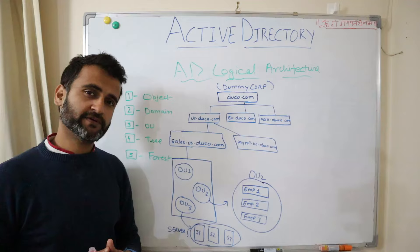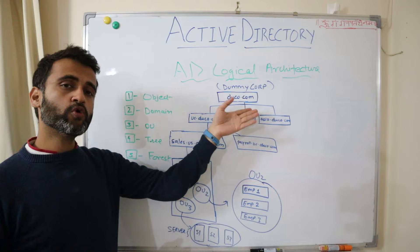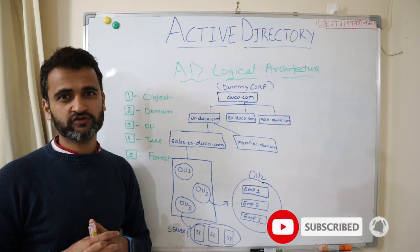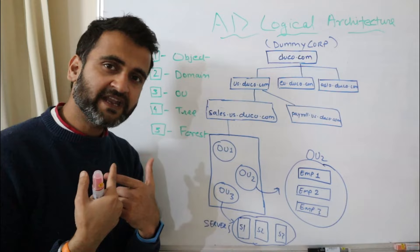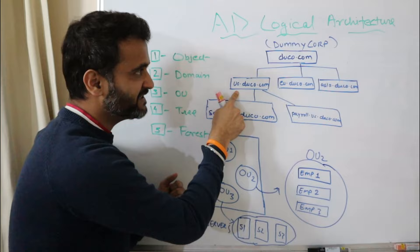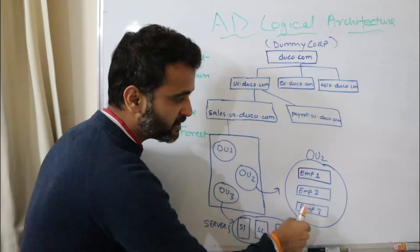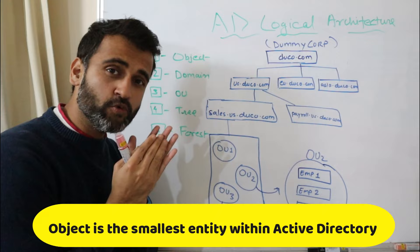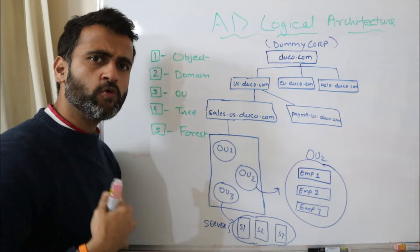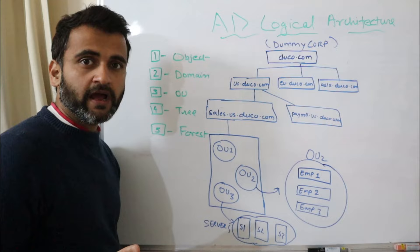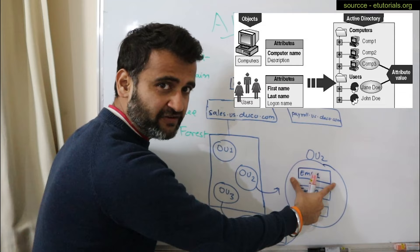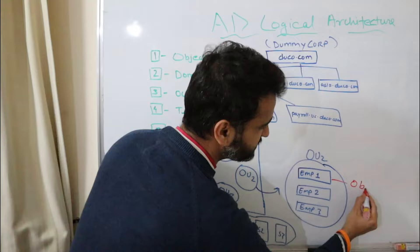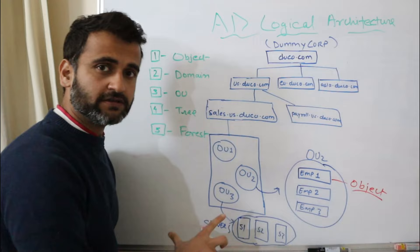Take for example this company named Dummy Corp. Dummy Corp has a domain which is duco.com, and this duco.com is based in three different locations — US, Europe, and Asia. Suppose an employee joins the sales team of the US region of Duco company. This particular employee will be tagged as an Object. Object is the most basic entity of an Active Directory, and this object will have its own attributes — employee ID, address, email address, phone number, personal details — everything forms as attributes to this particular object. This is the lowest entity.